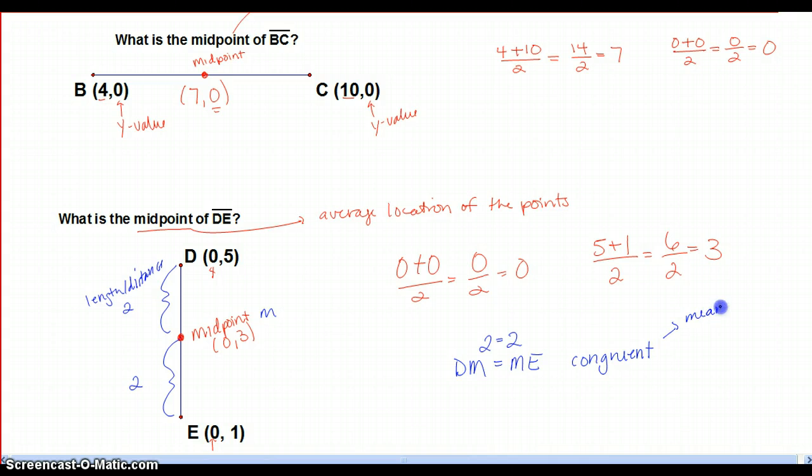Congruent means that the shapes, in this case the segments, are equal. Equal length, equal size, equal everything. And the way that we write that notationally is we would say segment DM, notice the symbol over the top, is congruent, now it's an equal sign with a tilde over the top, is congruent to ME. So notationally, this is how you show something is congruent. And to show something is congruent on the picture, they mark it with just a little hash mark. And if they have matching hash marks, then you know they are congruent. So DM is congruent to ME, and they're marked with those little hash marks.